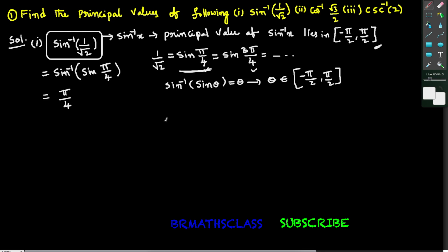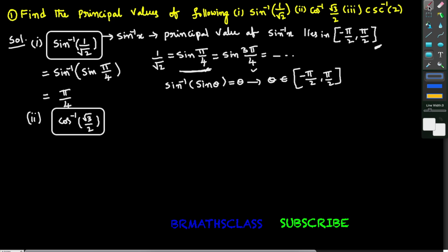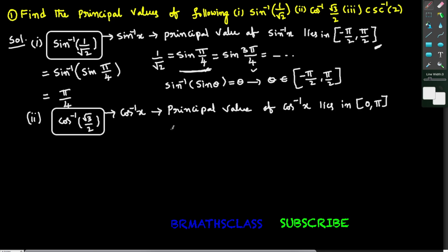Similarly we will calculate the principal value of cos inverse of root 3 by 2. Observe this expression — it looks like cos inverse x. We know that the principal value of cos inverse x lies in the closed interval 0 comma pi.